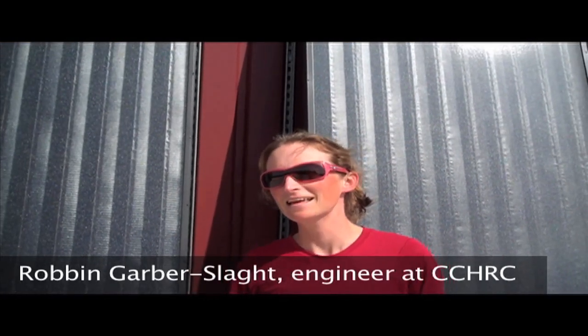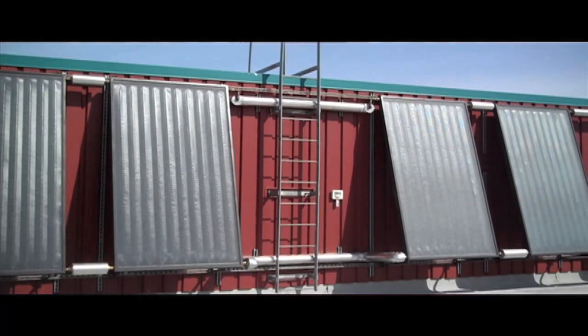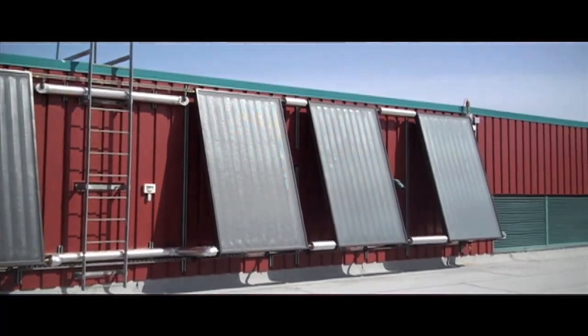The liquid that's pumped through the ground is pumped up to the ceiling, the roof of the school, and goes through the six solar panels which heat the liquid. Then that liquid is pumped back into the ground where it loses its heat.